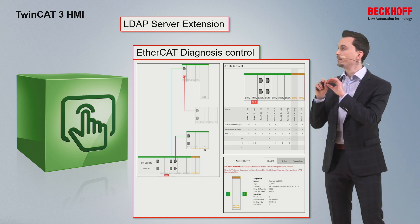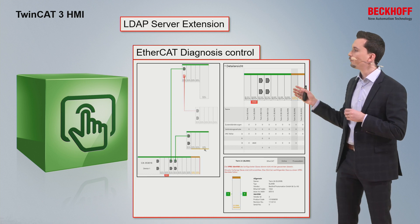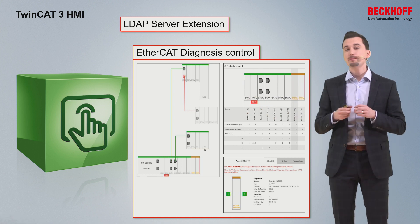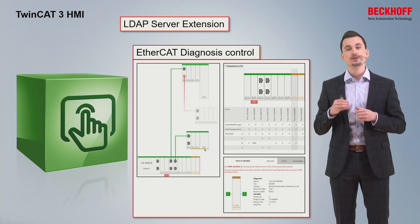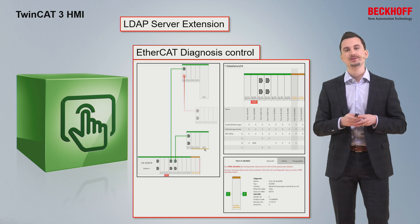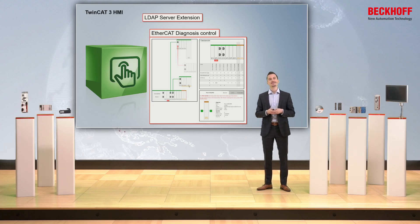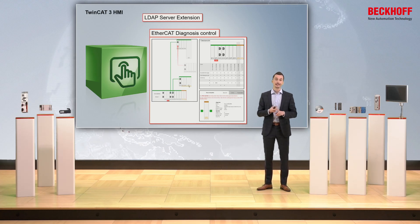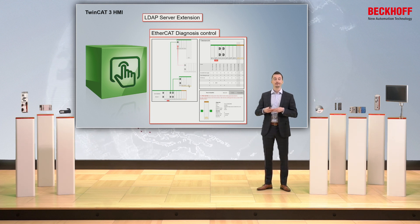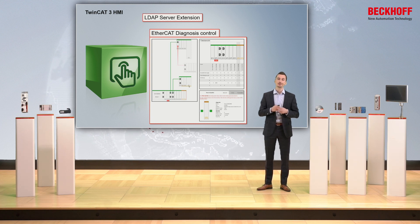It is possible to zoom into a specific area, for example, specific components. And it is even possible to select a single terminal to get a very detailed overview about that terminal. In addition, this control supports hot connect groups and it is possible to force values within the HMI client. So in case of a service case, you have very powerful tooling directly integrated in your TwinCAT HMI.